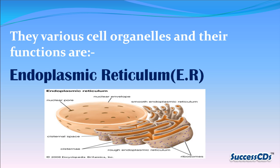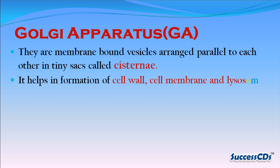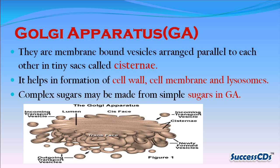The various cell organelles include the endoplasmic reticulum and Golgi apparatus. The Golgi apparatus consists of membrane-bound vesicles arranged parallel to each other in tiny sacs called cisternae. It helps in the formation of cell wall, cell membrane, and lysosomes. Complex sugars may be made from simple sugars in the Golgi apparatus.